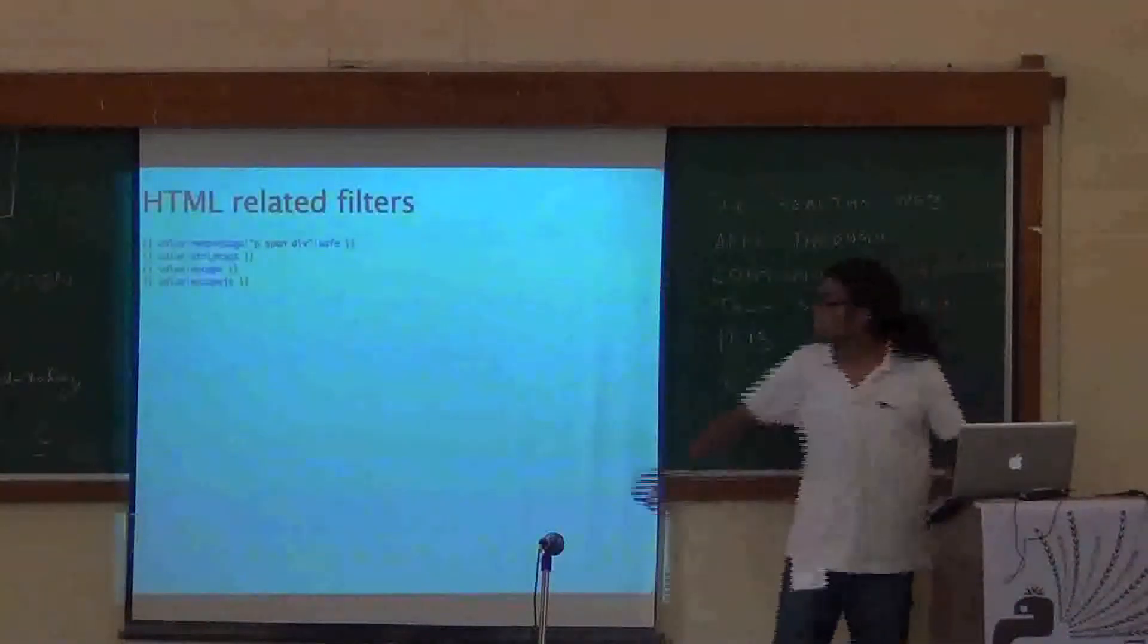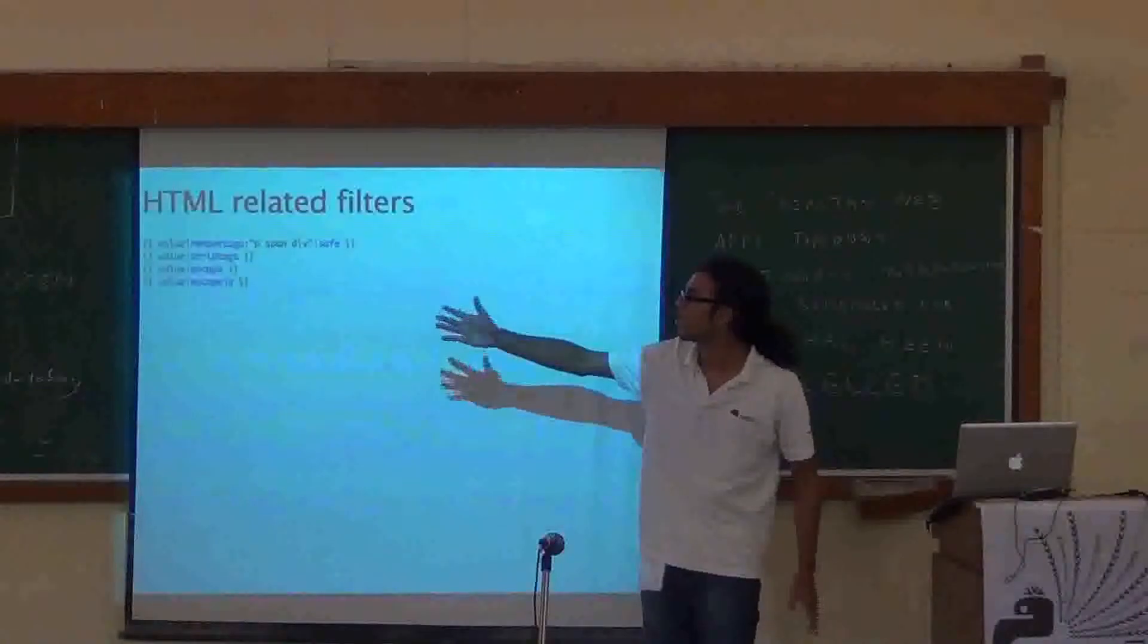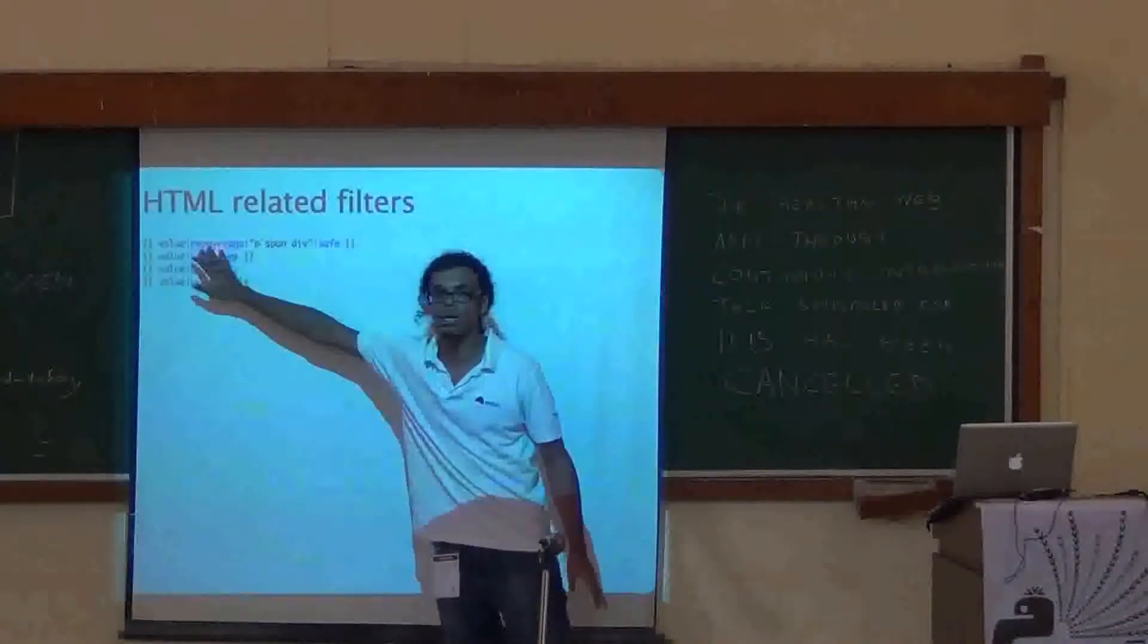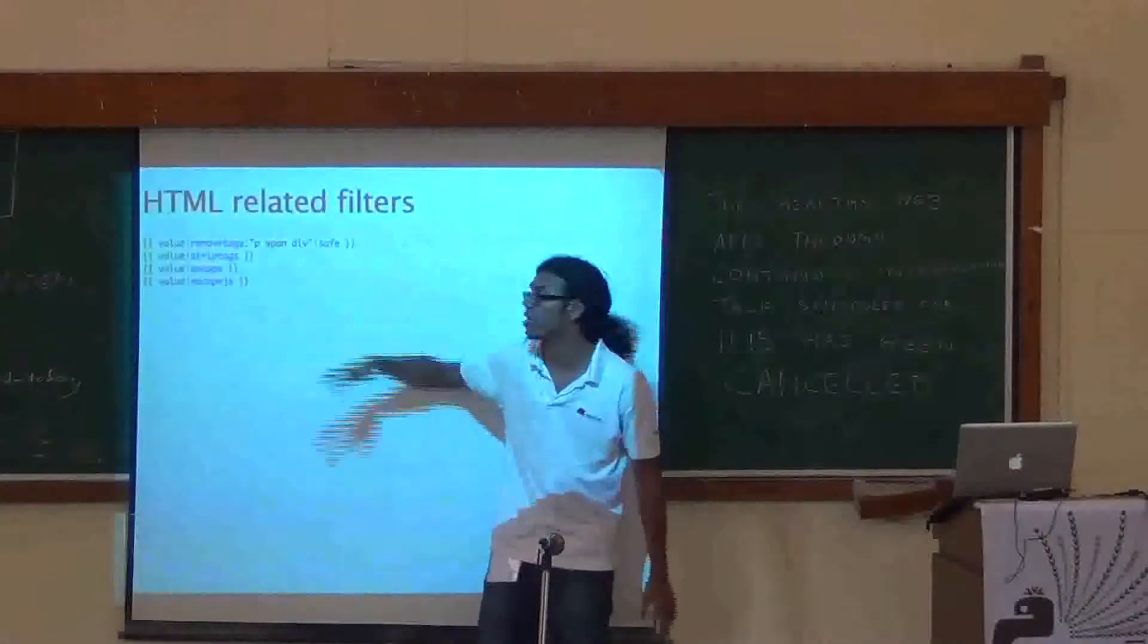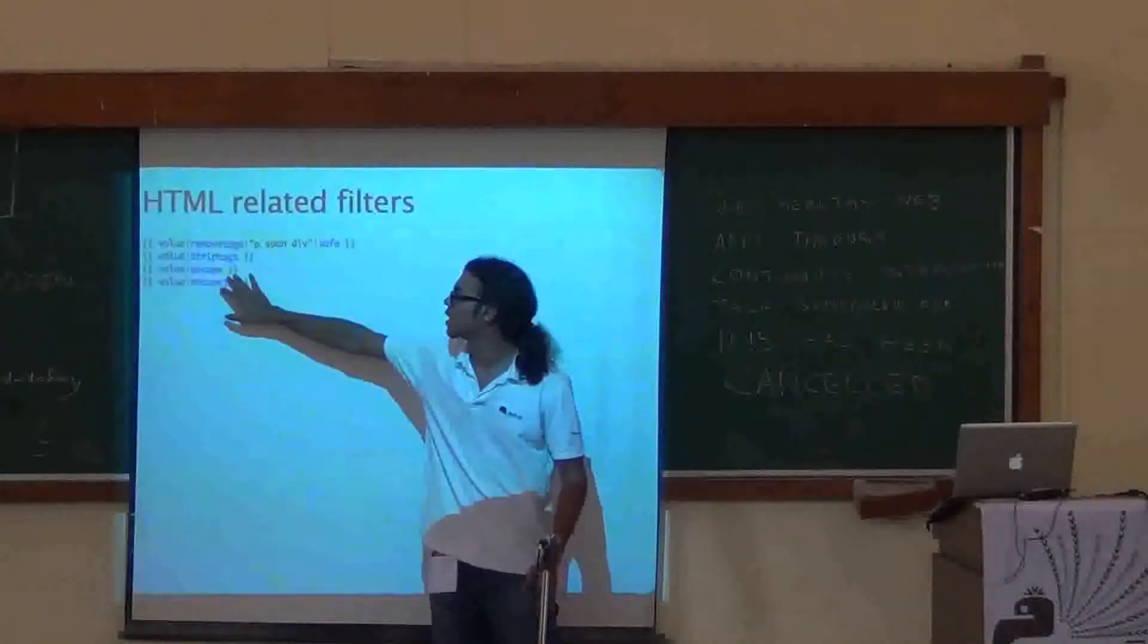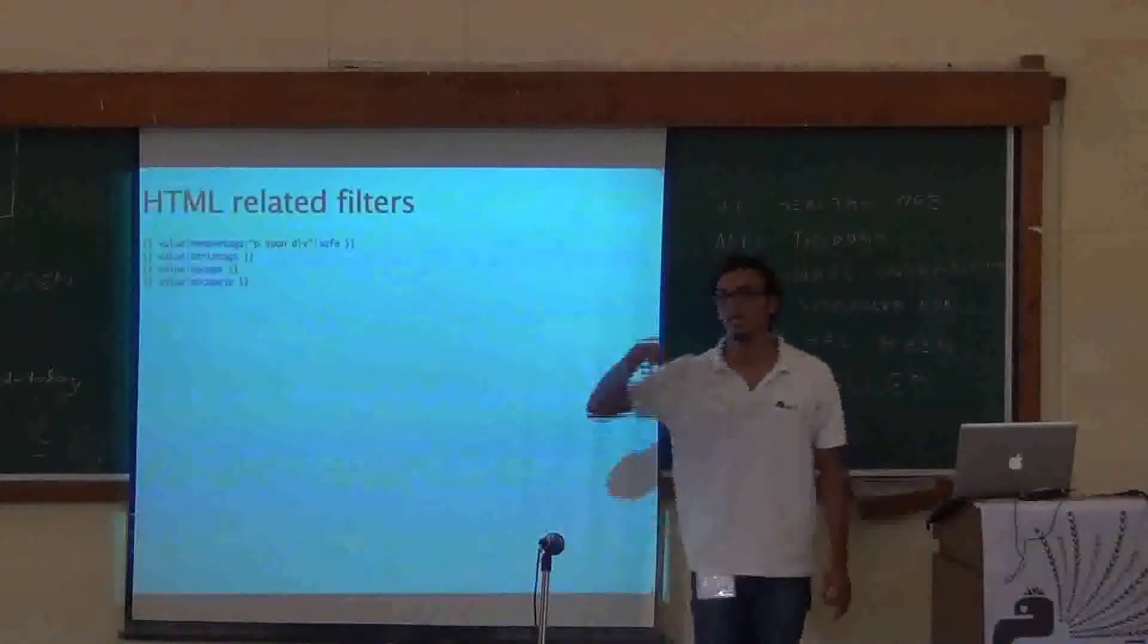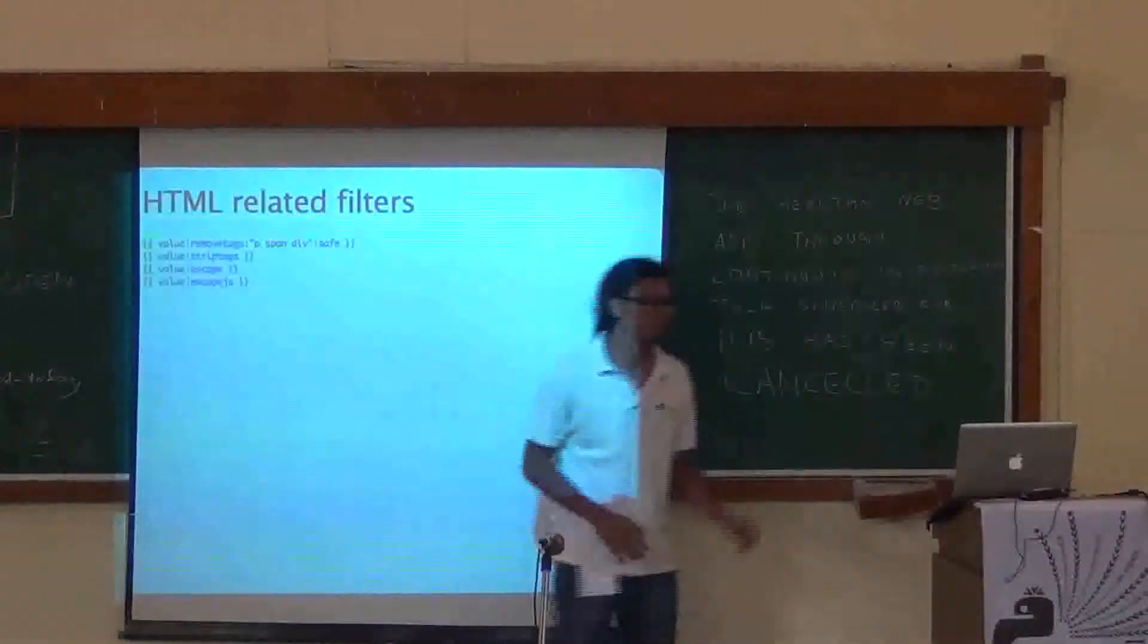Moving forward, these are very helpful tags if you are working with HTML data. So, remove tags takes some parameters, P, span. So what it will do is, if your entire text has P tags, and span tags, and div tags, it will just remove them. You can add whatever tags you want. Strip tags will remove all tags. Escape will escape your less than with ampersand LT, ampersand GT, and everything. Escape JS will escape it for JavaScript.